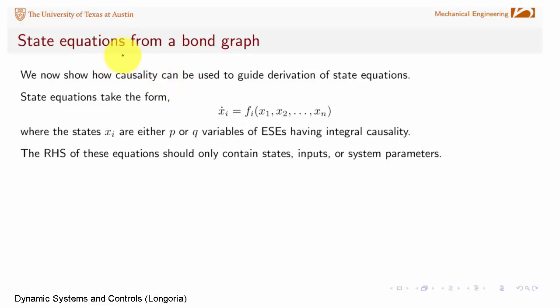We're now going to begin using a bond graph and causality to derive the state equations for a system. Remember the form of the state equations that we'll derive, which is made convenient using a bond graph, is in the form of first-order differential equations in terms of the n states.